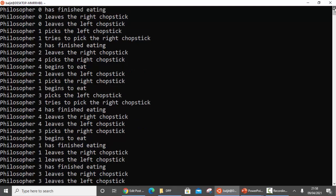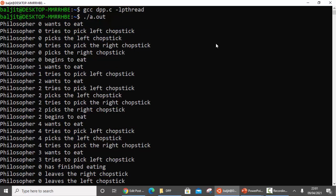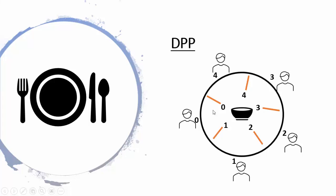Let's understand this output. Philosopher 0 is the first one who wants to eat. He tries to pick the left chopstick and picks it successfully, then picks the right chopstick and philosopher 0 begins to eat. Since philosopher 0 is eating, chopstick 0 and chopstick 1 are occupied. During the sleep of 2 seconds, philosophers 1, 2, 3, or 4 can try to eat. Philosophers 1 and 4 should not be able to eat since they share chopsticks with philosopher 0, but 2 and 3 can.